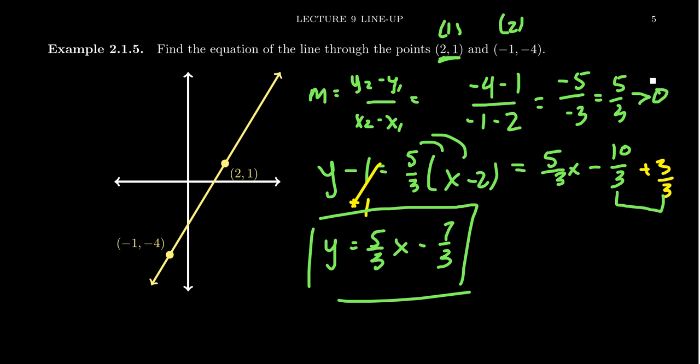This shows you how we can find the equation of a line if we know some information about it — like points on the line or the slope of the line. If you don't know the slope, take your two points and use the slope formula to find it. That's the key information we need.